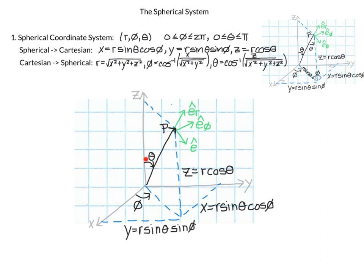Then we have angle theta, which is the angle that you would rotate the z-axis down until it touches P — the angle between the z-axis and the vector to P. Then we have phi: if we project point P down into the x-y plane, phi is the angle between the x-axis and that projection in the x-y plane.